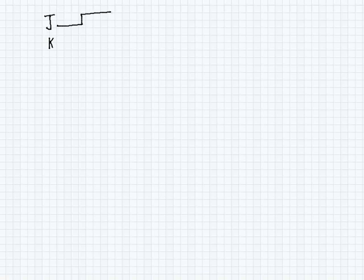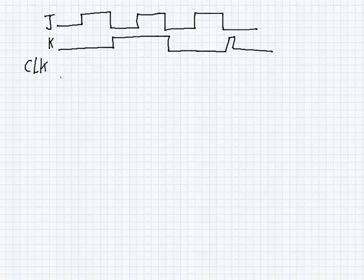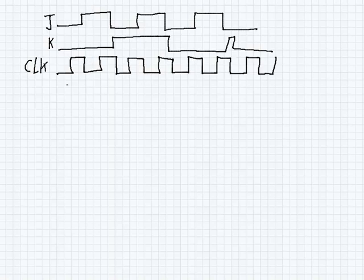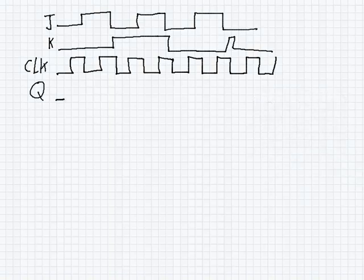Let's look at a timing diagram example for a JK flip-flop with a rising edge trigger. I've drawn J, K, and a clock signal. Let's say Q starts at 0. At the first rising edge of the clock, J and K are both 0, so we're going to stay at 0 — that's the latch state.